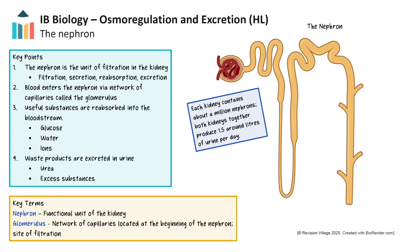To understand how the kidney carries out osmoregulation and excretion, we need to look more closely at the nephron, the microscopic functional unit of the kidney. Each kidney contains about a million nephrons, and each nephron performs the essential steps of filtration — the selection and movement of substances from the blood to the nephron — reabsorption, the selective movement of substances from the nephron back to the bloodstream, and excretion. We will explore these processes later on in the video.